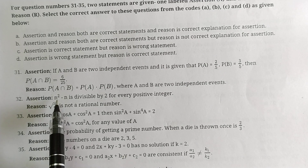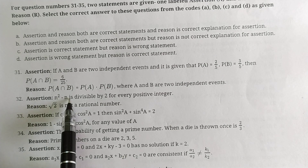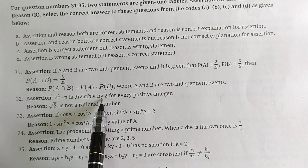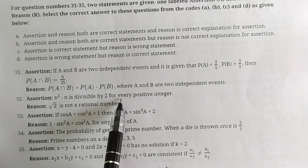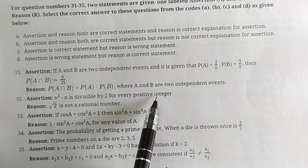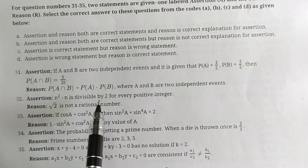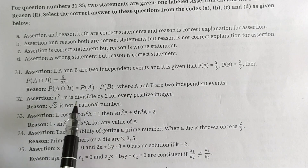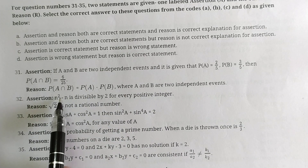Question 32: The assertion states that N² - N is divisible by 2 for every positive integer N. Let's verify this by checking a few values.